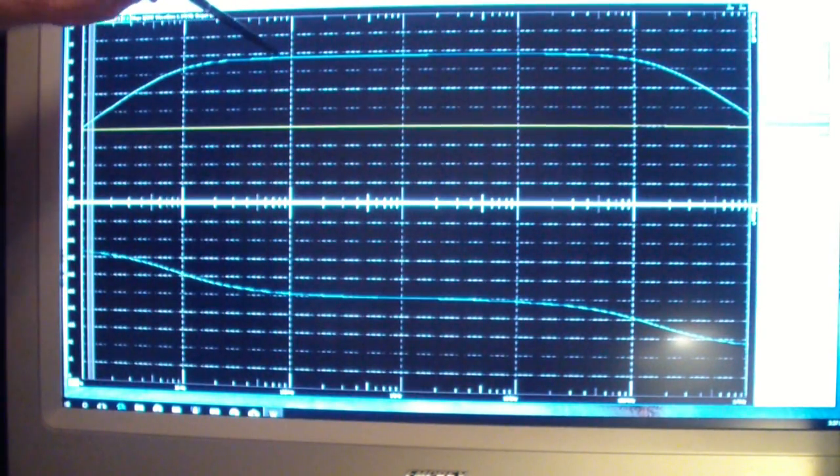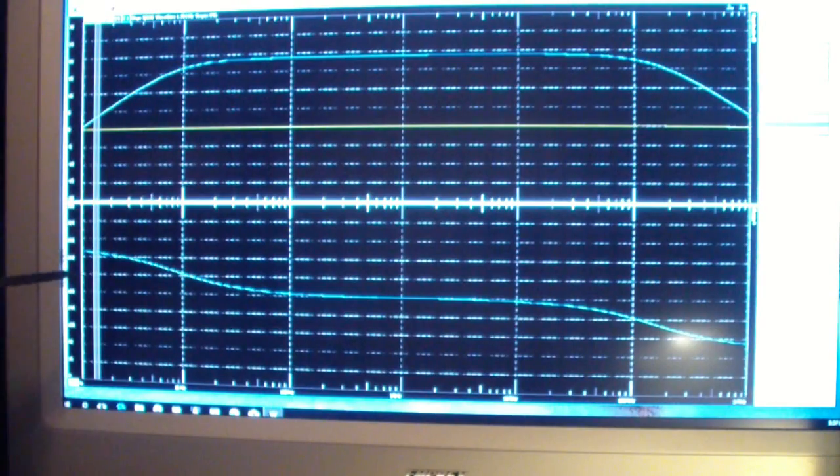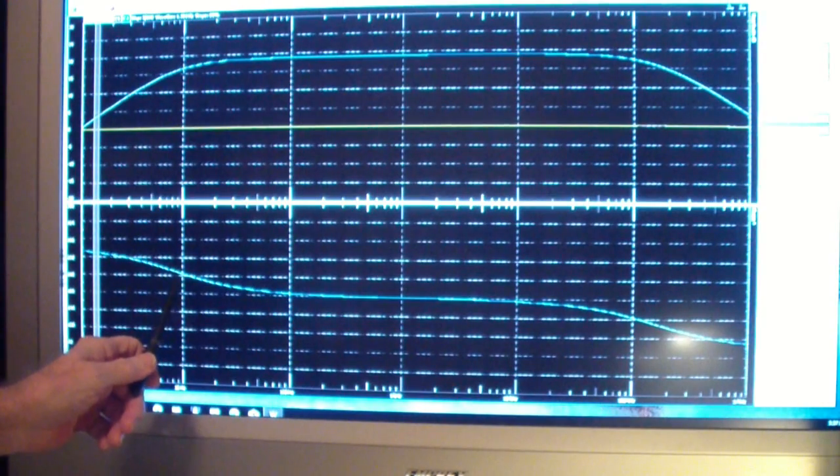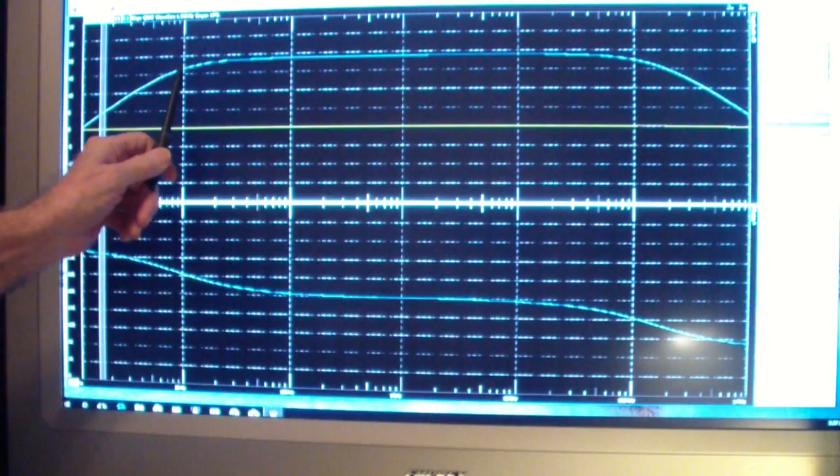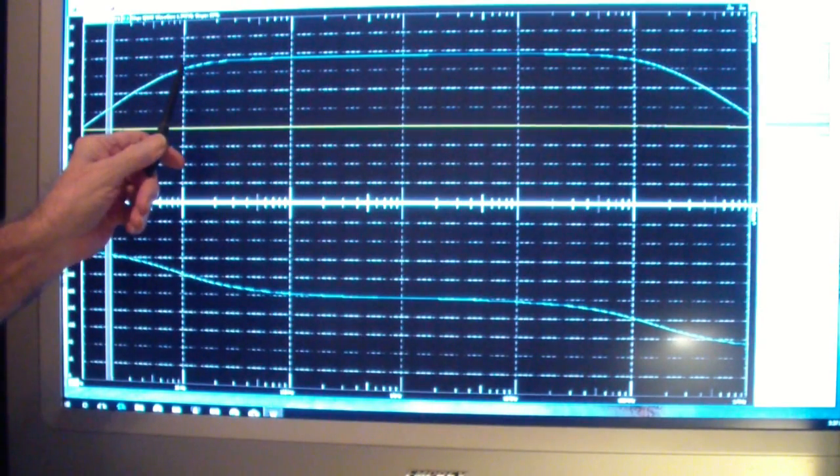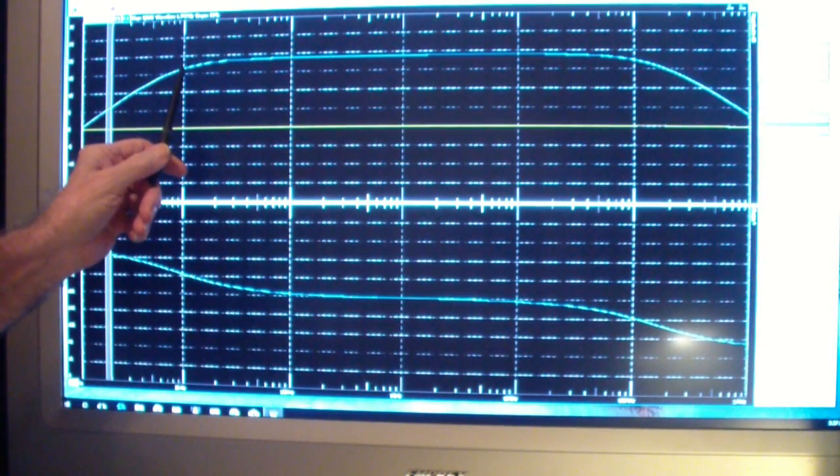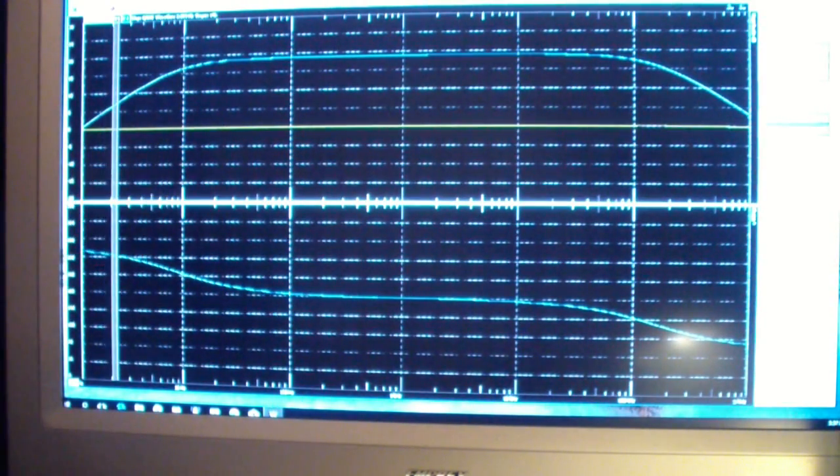Nonetheless, you can see that the gain and the phase over the range from 10 Hz, which is where we calculated that our capacitor would be 3 dB down. And so we are down about 3 dB at 10 Hz.